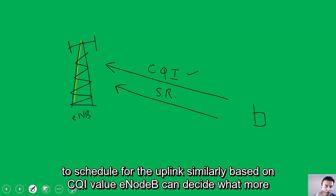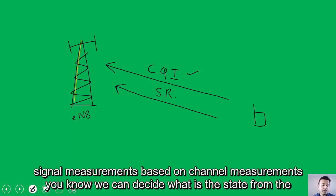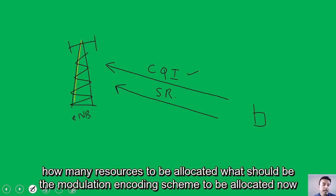Based on the CQI value, the eNodeB can decide what modulation and coding scheme to use if there is data coming for a user. Based on reference signal measurements and channel measurements, we can determine the state of users in the time and frequency domain. If many users need to be served, the eNodeB decides how many resources to allocate and what modulation coding scheme to assign.